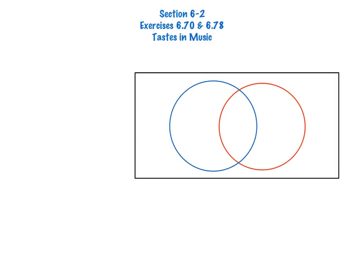We have two different events: those college students who like country music, those college students who like gospel, and then those who like both. Whenever I'm completing a Venn diagram, I like to begin with those who like both.